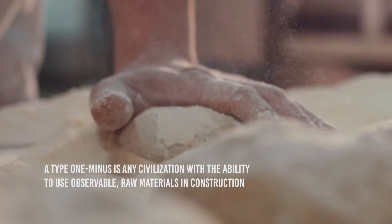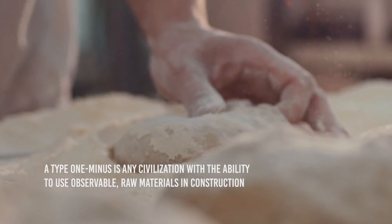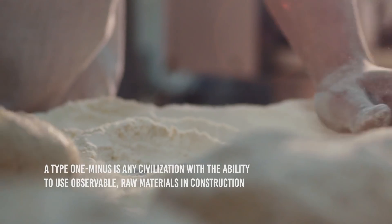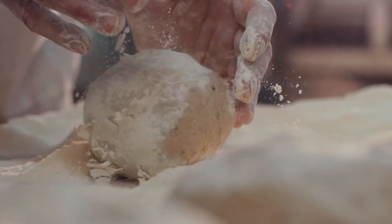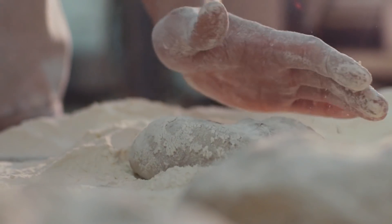A type 1 minuscule is any civilization with the ability to use observable raw materials in construction, which covers a range of things that humans can already do, from building a house to baking a cake.